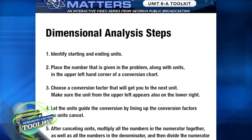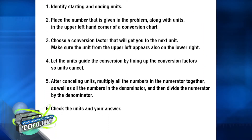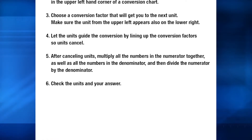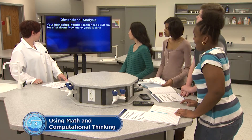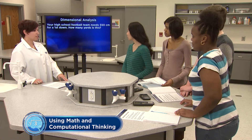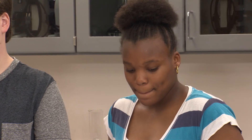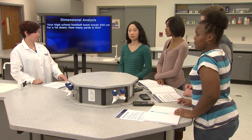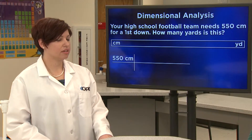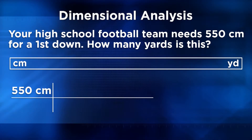Let's solve a problem together step by step. Your high school football team needs 550 centimeters for a first down. How many yards is this? First, we need to find our starting and ending units. We've got 550 centimeters and we need to convert that to yards. Next, we create a conversion chart and put 550 centimeters in the upper left-hand corner. Now we've identified what we're starting with and where we want to go.